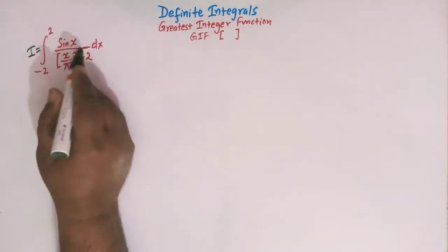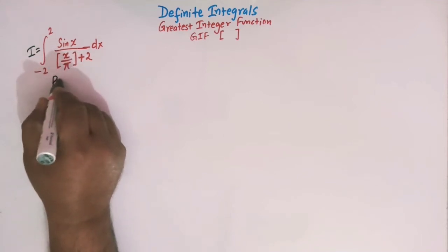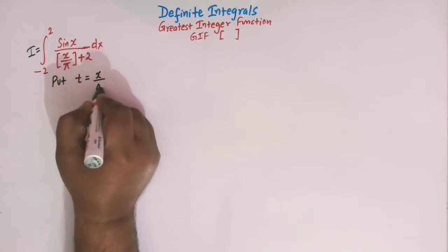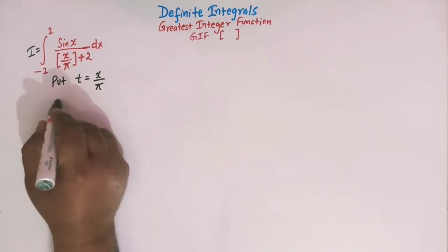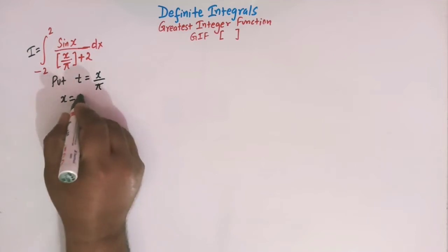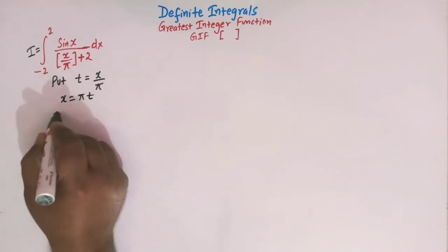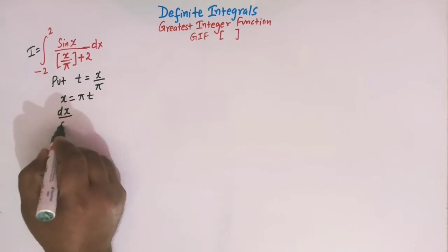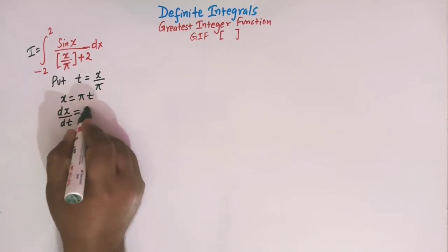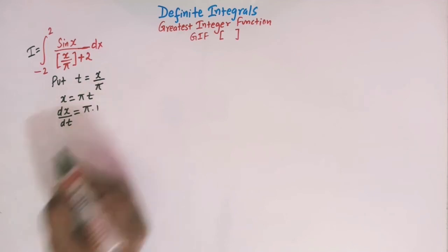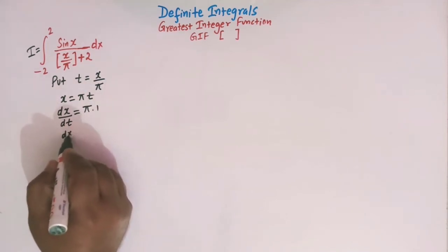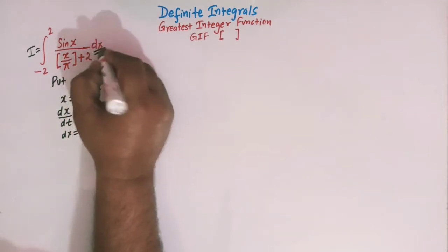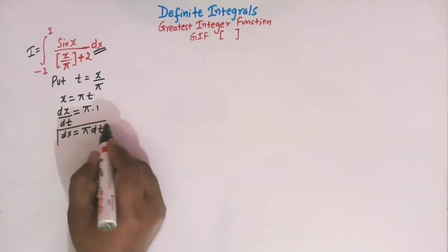What we will do first is put t equal to x over pi. So when t is x over pi, then x is equal to pi·t. Differentiating both sides with respect to t, we have dx/dt equal to pi, so dx is now pi·dt.